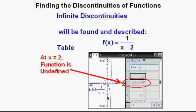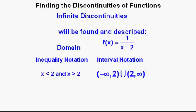In interval notation, the domain is x greater than negative infinity and less than 2, union x greater than 2 and less than infinity. The large U connecting the two intervals is called a union.